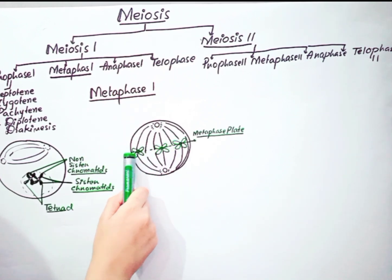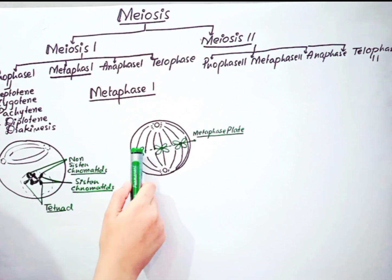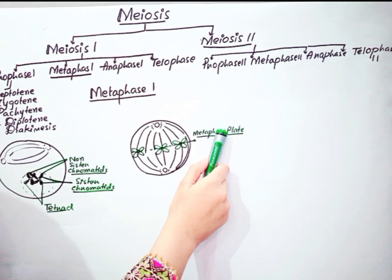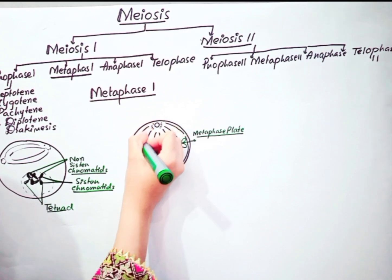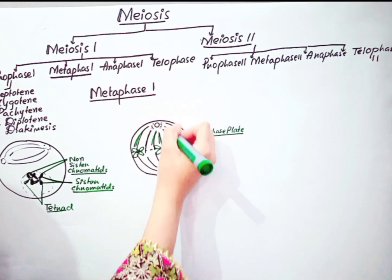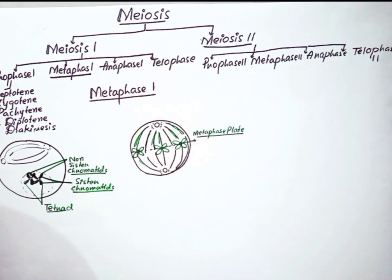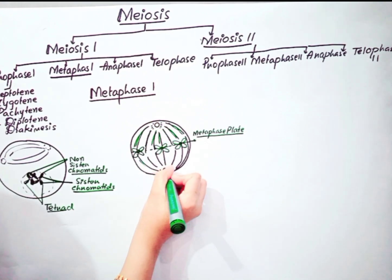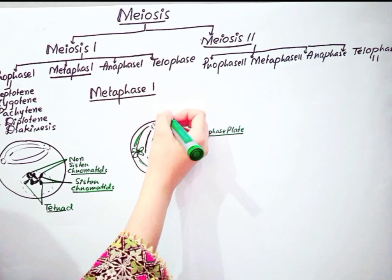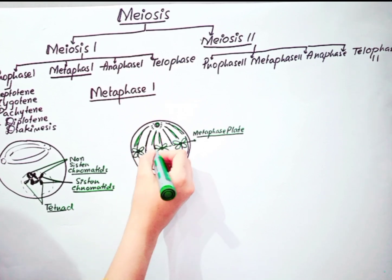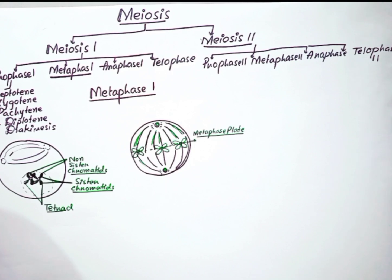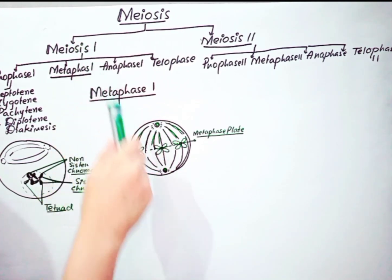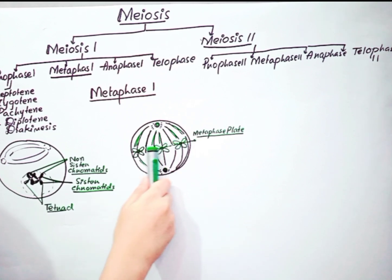During metaphase 1, the homologous chromosomes — the tetrad and bivalent — align at the equatorial plate or metaphase plate. Microtubules arise from the centrioles or centrosome at the opposite poles, and the microtubules from opposite poles attach to the pair of homologous chromosomes. The main difference between metaphase 1 of meiosis and metaphase of mitosis is: during metaphase of mitosis, individual chromosomes align at the metaphase plate, but in metaphase of meiosis 1, the homologous chromosomes or tetrad align at the equatorial plate.